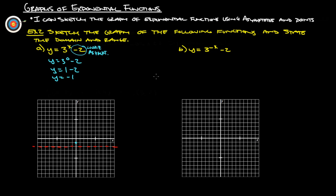It also says find two other points. Let's plug in a couple of nice points. Probably x equals one would be a nice one. So y equals three to the first minus two.